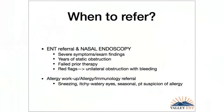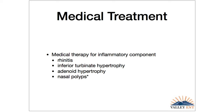When should you refer someone? If the patient has severe symptoms, years of static obstruction, or failed prior therapy. The key red flag — cannot mention enough — is unilateral obstruction with epistaxis: think tumor. The goal of medical therapy is to reverse the inflammatory component. Even if there's a structural component, improving the inflammatory component may be enough for good breathing. Conditions amenable to medical treatment include rhinitis, inferior turbinate hypertrophy associated with rhinitis, adenoid hypertrophy, and nasal polyps via oral and topical steroids.